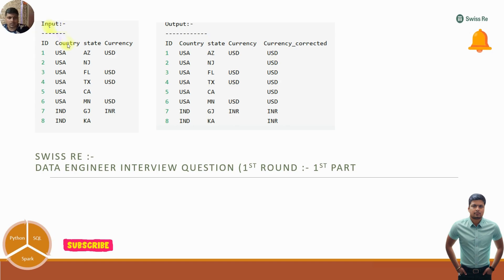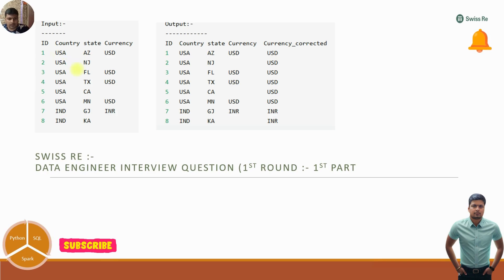The first question — the input has columns: ID, country, state, and currency. For USA there are six states, but currency is given for only four of them. For India there are two states and the currency is INR. They want the output to fill in the missing currency values.